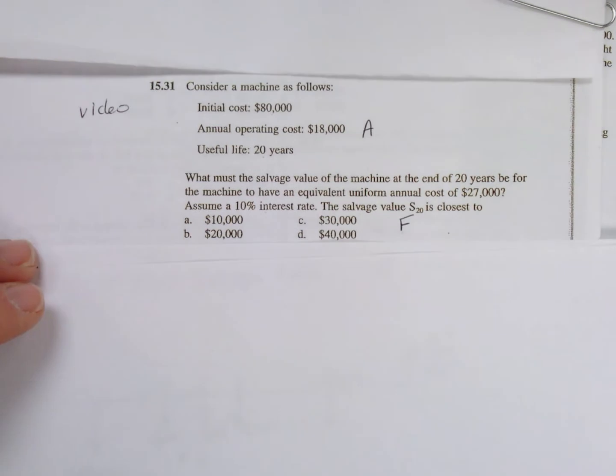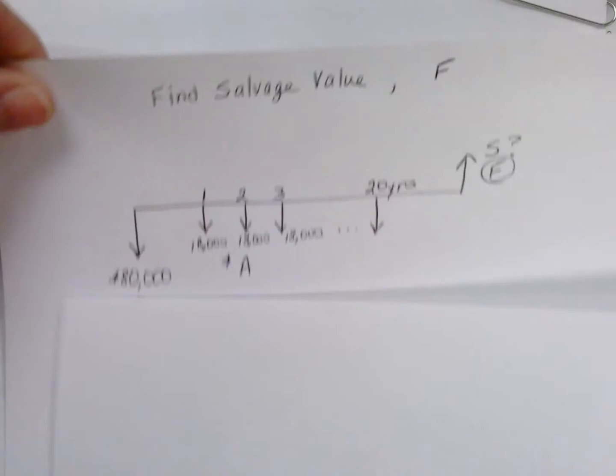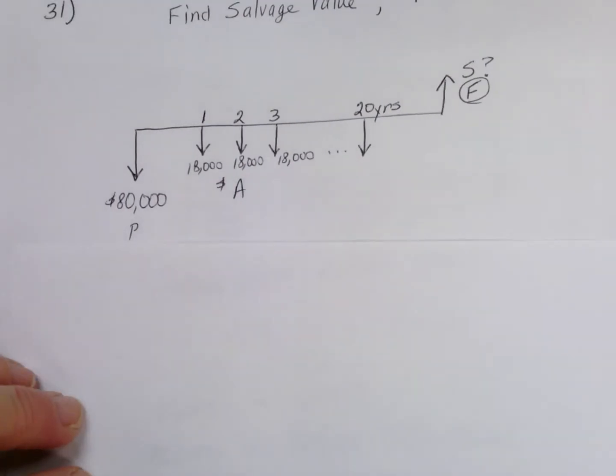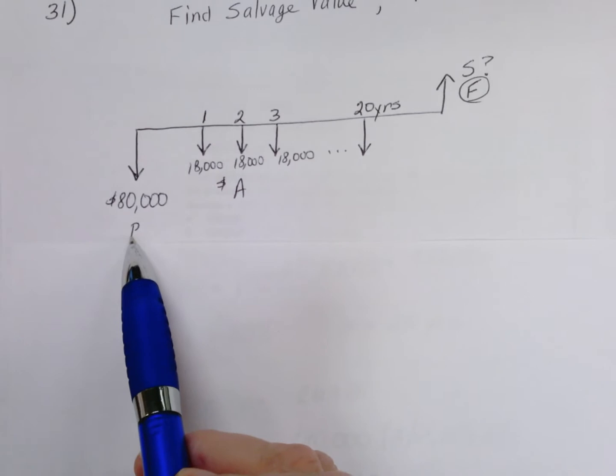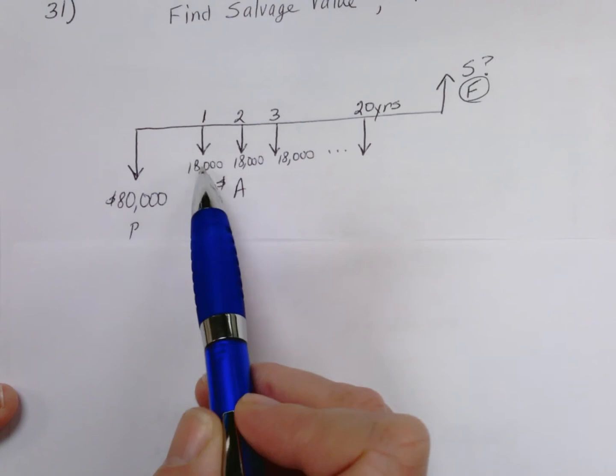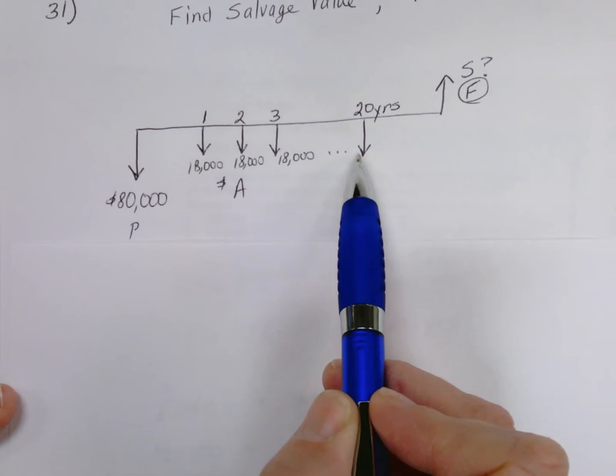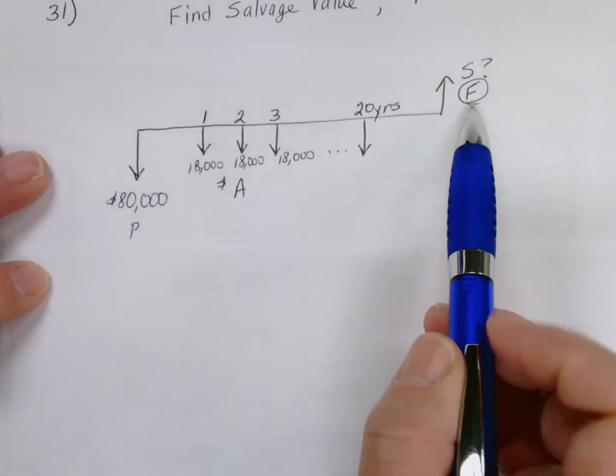Let me show you that on a timeline to fully explain what that would look like. We've got our initial cost of the machine going out in today's dollars, present value—the cost machine cost $80,000. Maintenance cost, equal uniform annual maintenance costs, are $18,000 per year for 20 years.